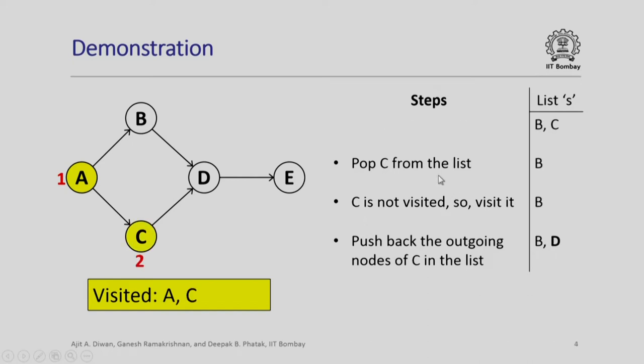Next, we pop the next node from the list as a stack. Since this is being treated as a stack, we pop C from the list. When we pop C from the list, the list contains only B. Now we look at C which we have just popped. It is not visited, so we will visit it. When we visit C, we find that C has an outgoing edge to D. So we will push back the outgoing nodes of C which is D onto the list. The list will now contain B and D.